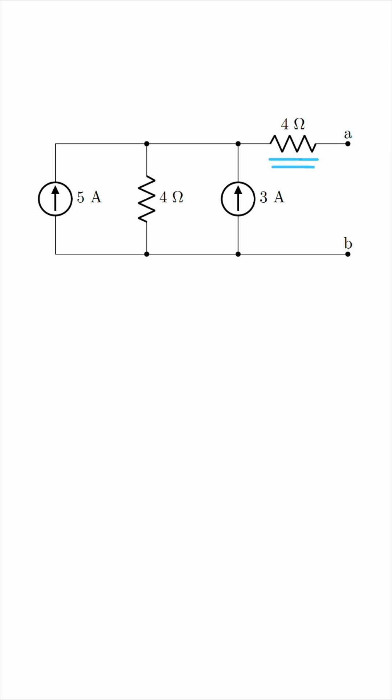In other words, both current sources feed this 4 Ohm resistor that is parallel over here, meaning that we can replace the two current sources with a single 8 Ampere current source.